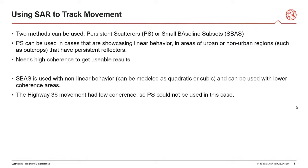A persistent reflector is where you are getting the same signal off of something — say a house, maybe it's on top of something that's subsiding, moving down a cliff — but it is still the same house, so we're getting a persistent reflectance response from it. You need high coherence to get usable results with persistent scatterers, meaning you need very similar likeness between your images to get those usable results. SBAS can be used with non-linear behavior — maybe a quadratic or cubic motion has occurred — and it also can be used with areas of lower coherence. Areas that are highly vegetated, such as forests or with dense grass growth, have very low coherence, so if you're looking at a scene like that, you most likely want to use SBAS instead.